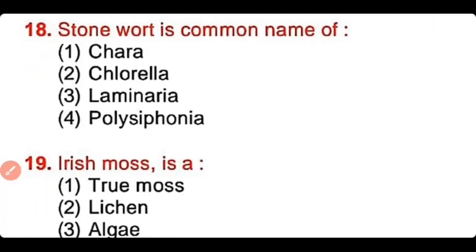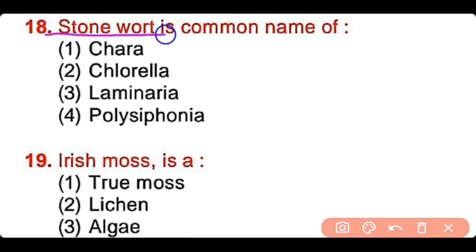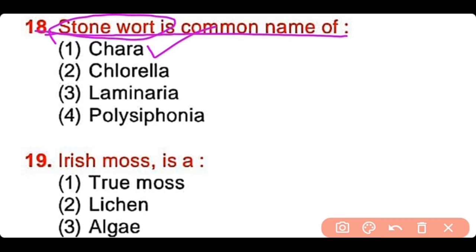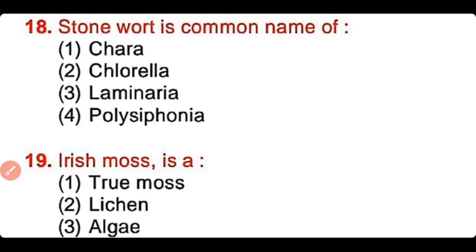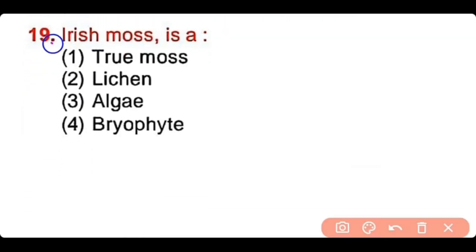Question number 18: 'Stonewort' is the common name of Chara, Chlorella, Laminaria, or Polysiphonia? The correct answer is option 1. Chara is commonly known as stonewort. Question number 19: Irish moss is a true moss, lichen, algae, or bryophyte? The correct answer is option 3. Irish moss is a true algae.